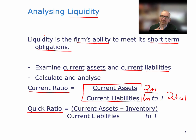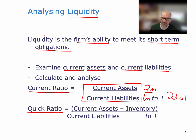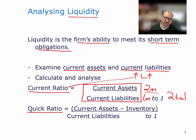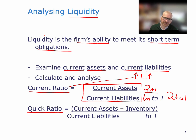The bigger the current assets are compared to the current liabilities, the higher the current ratio will be. In general, we think that a high current ratio means higher liquidity — a better liquidity position. However, we don't want to get too bogged down in this metric. We want to also consider what the current assets are made up of. If there's a lot of non-liquid assets in the current assets, then maybe the liquidity position isn't as good as it appears at first glance from the current ratio.